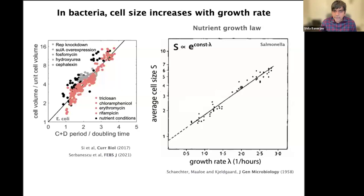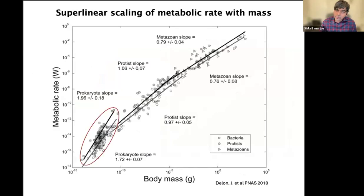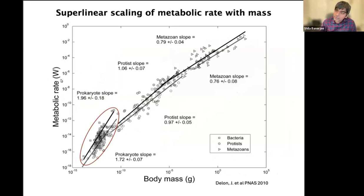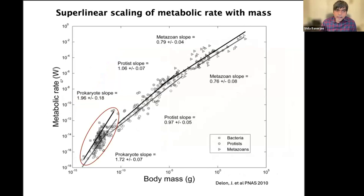Furthermore, if you think about metabolic rate — how fast prokaryotes such as bacteria consume energy — that is very fast, it's super-linear. The scaling exponent, if you focus on the bottom left corner of the screen, shows the metabolic rate of bacteria goes as 1.72 powers of mass, which is very different from the 3/4 scaling we see for mammals. So all of these behaviors are very distinct from higher organisms.